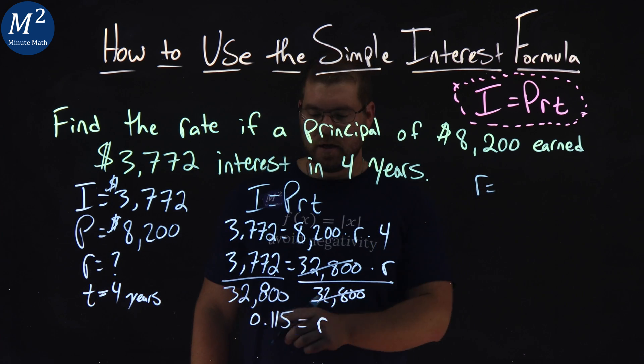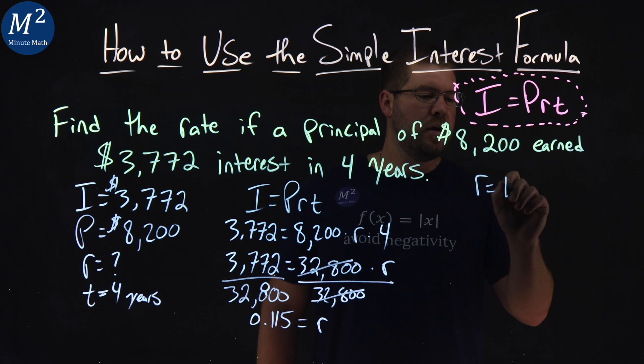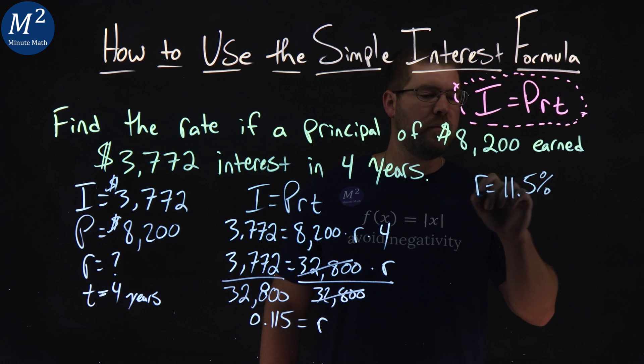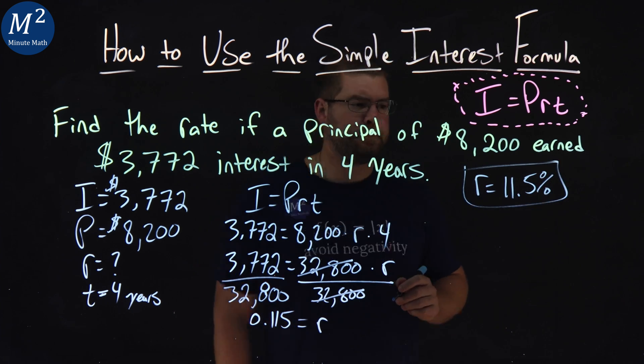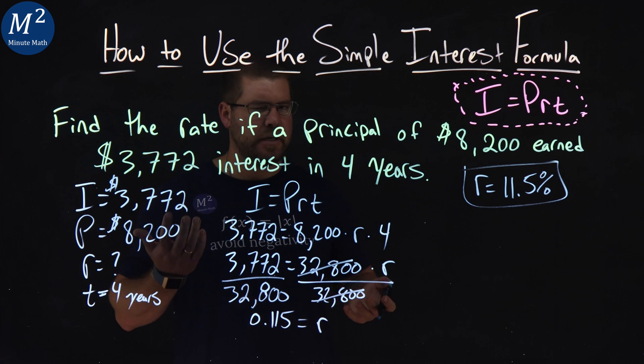So that gives us an interest rate of, moving the decimal over two spots, 11.5% right there. So how do we check this to make sure?